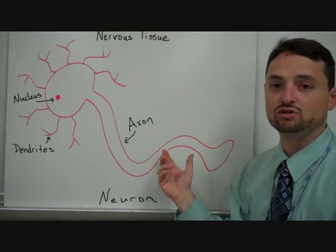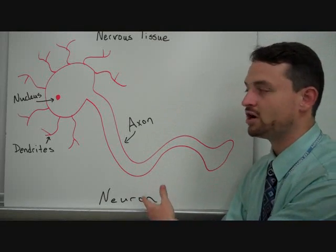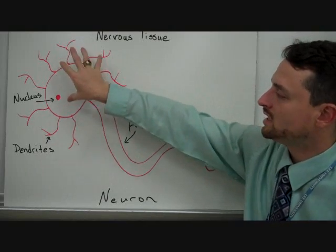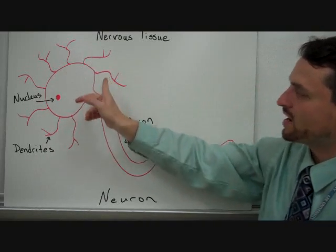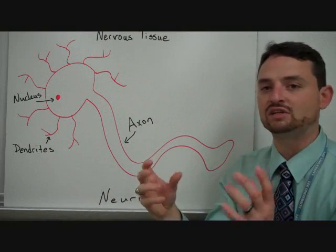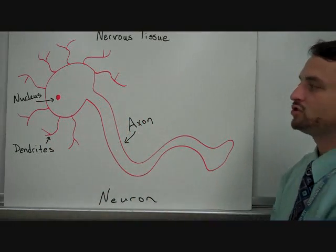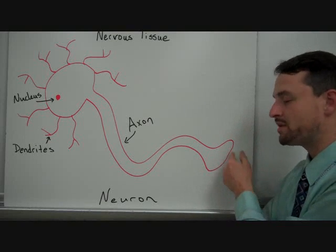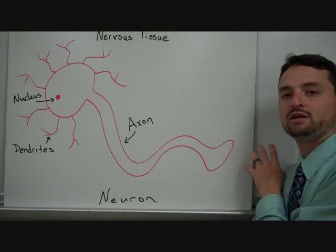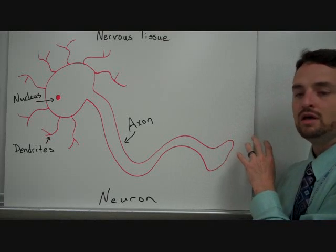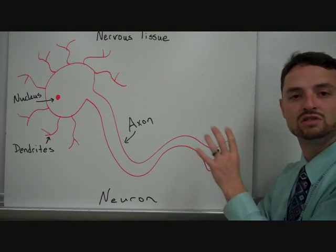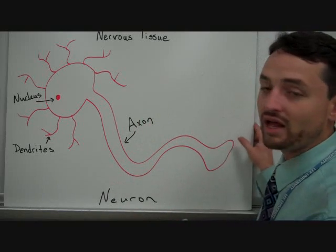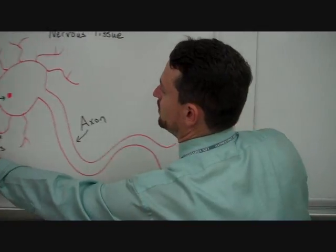Then we have nervous tissue, which is very simple. We've got the neuron, which is the nerve cell. The neuron has a body with a nucleus, dendrites around the edge that will receive signals, and then an axon that will transmit that signal to something else. Usually it releases some kind of neurotransmitter that will then be picked up by another cell — it may be a nerve cell or another cell like a muscle cell that does a function. We'll go into the nervous system in a little bit later.